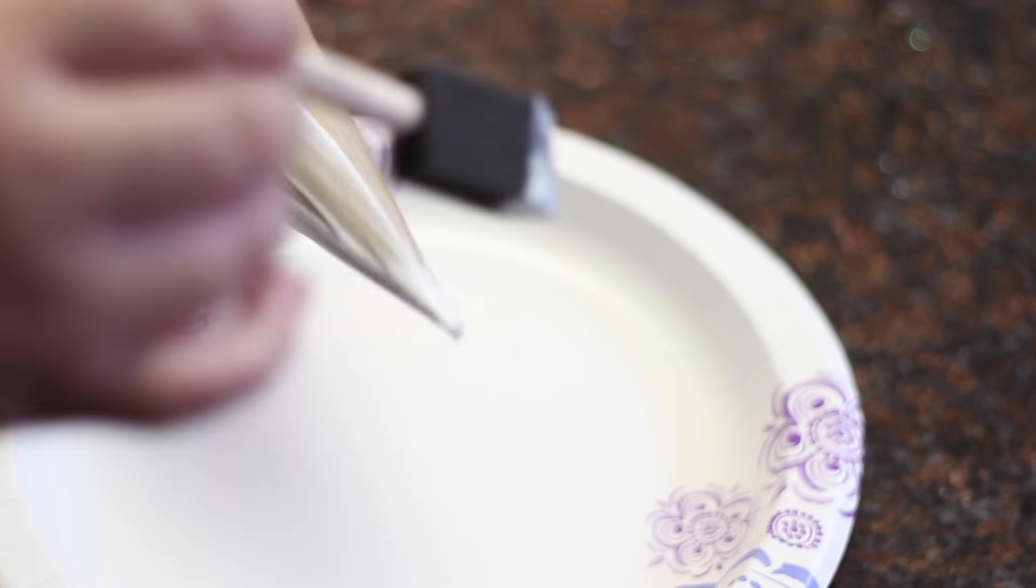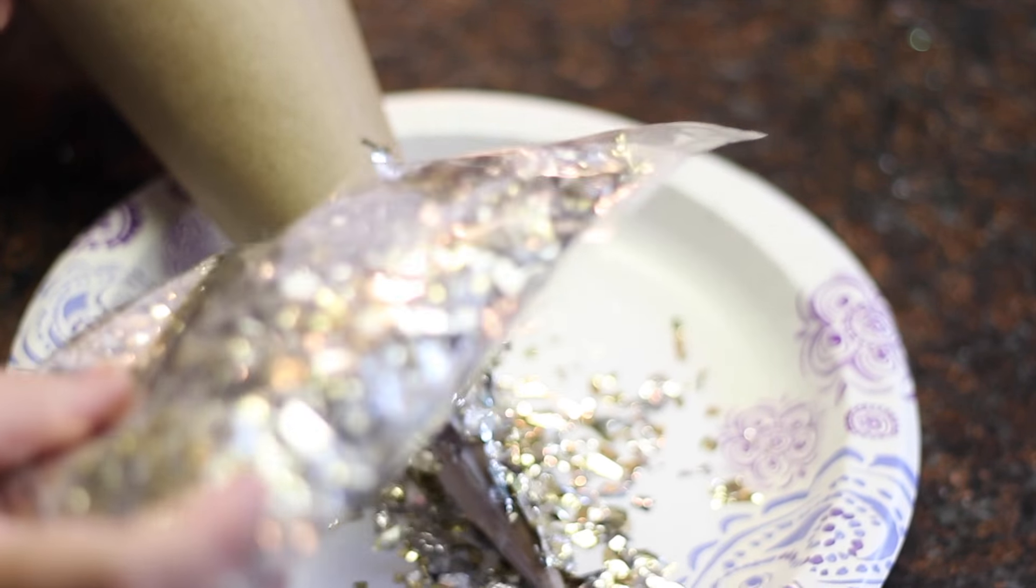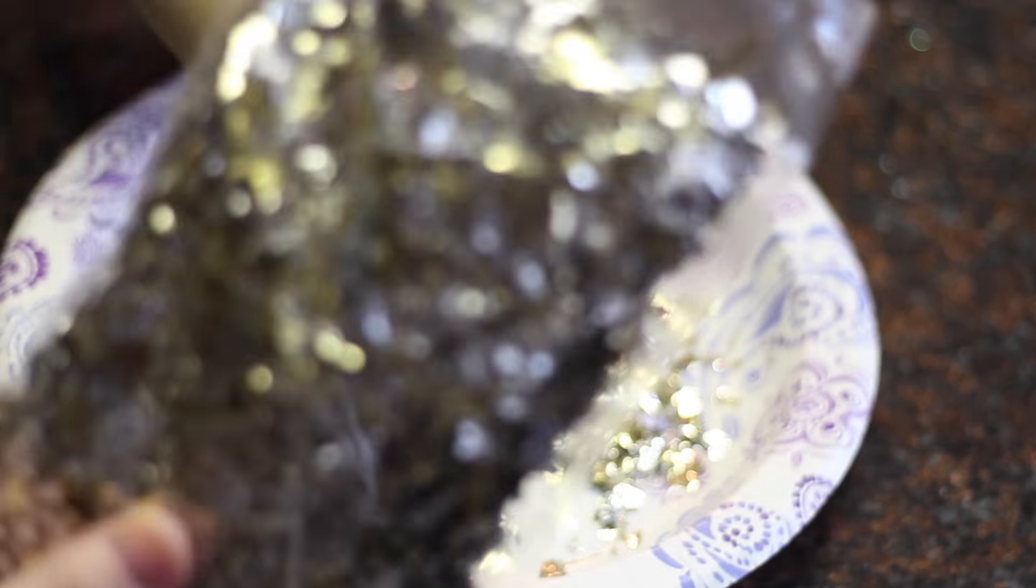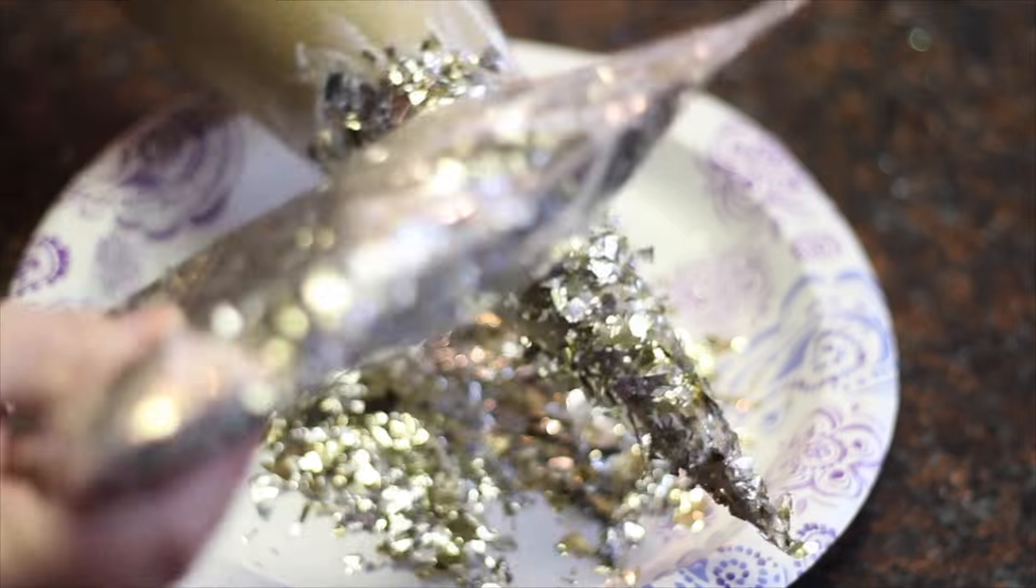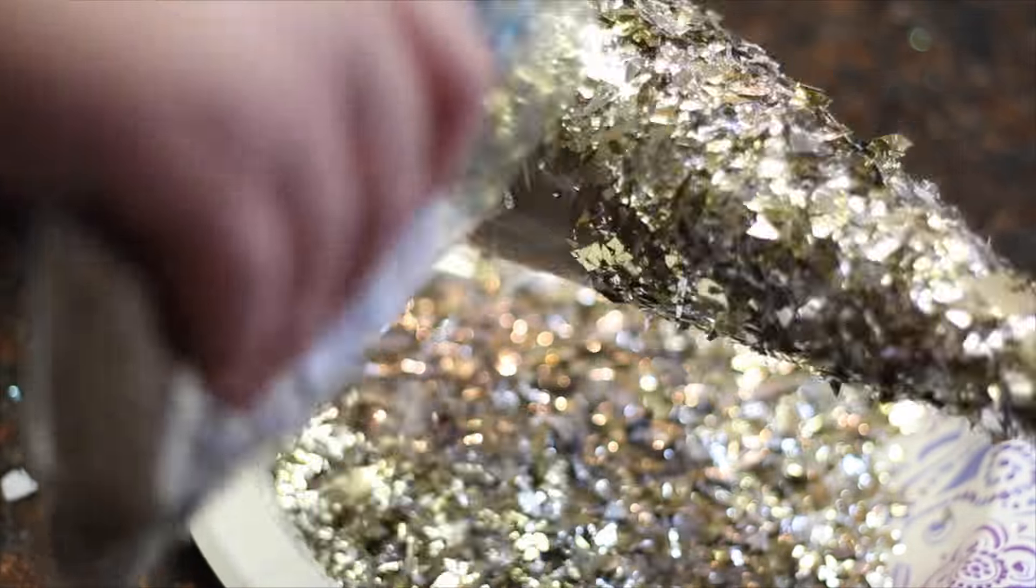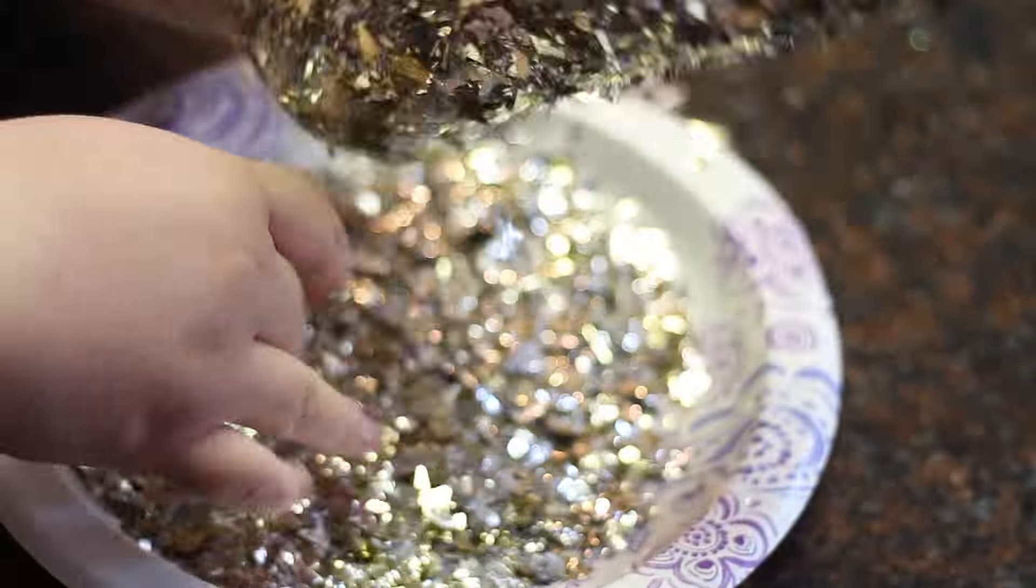Brush some Mod Podge onto the paper mache cone and then sprinkle the confetti onto it. You can also use glitter as an alternative. You can do this in sections as well so that the glue doesn't dry up. Once it's fully covered, you can go back and fill in any spots that you may have missed.